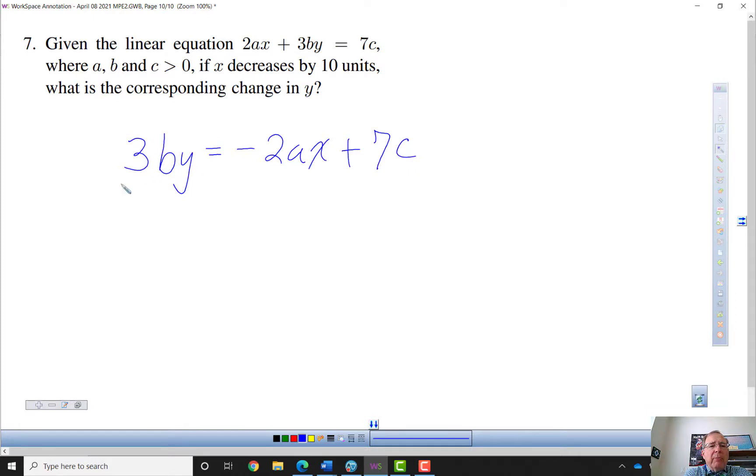So I want to get Y by itself, so I'm going to divide both sides by 3B. So Y equals negative 2A divided by 3B times X plus 7C over 3B. So this expression right here is the slope.